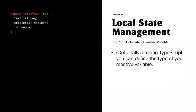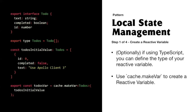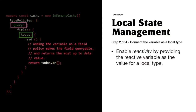Let's say we wanted to build the entire to-do app from scratch using local state only — it's a lot easier to do now. First we define the structure of a Todo type, do some data modeling, and set up the initial value — in this case an array of one to-do. Next we create a local variable called todosVar using the cache.makeVar function, passing in the initial value at the time of creation. Then in our cache policies, we hook it up by saying: on the Query type, any time we ask for allTodos, return the current value of the todosVar reactive variable.